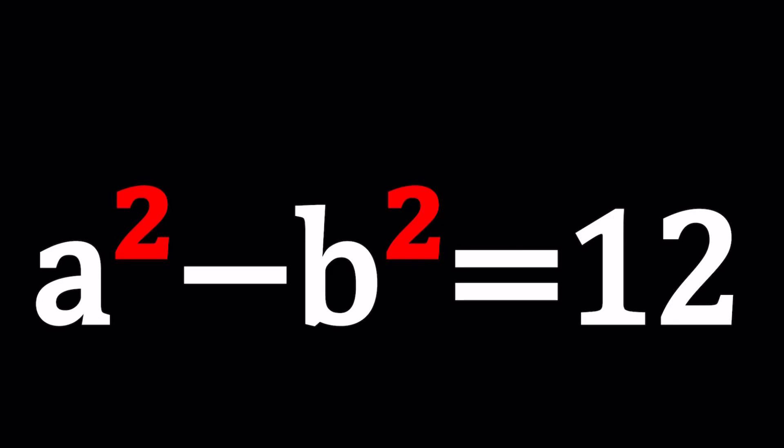Hello everyone. In this video, we're going to be solving a nice Diophantine equation for integer solutions. So A and B are integers, and we have A squared minus B squared equals 12. And we're going to be solving for A and B values.